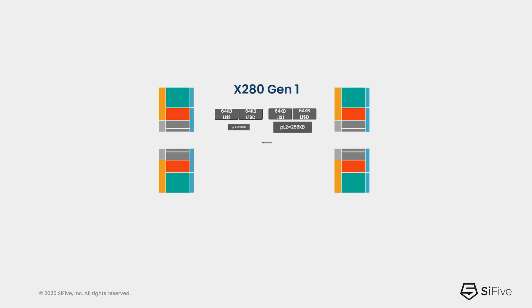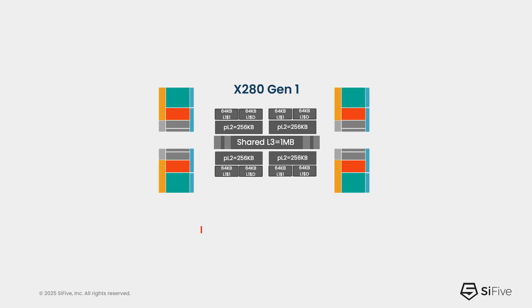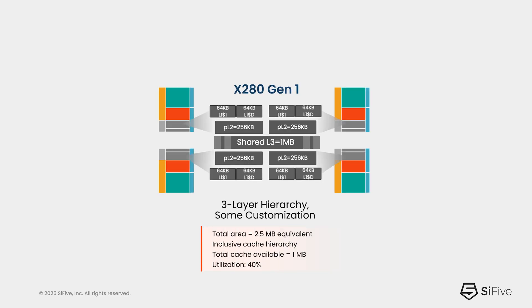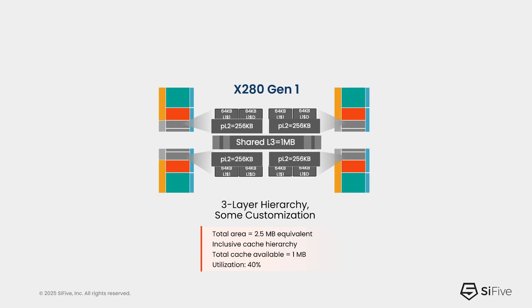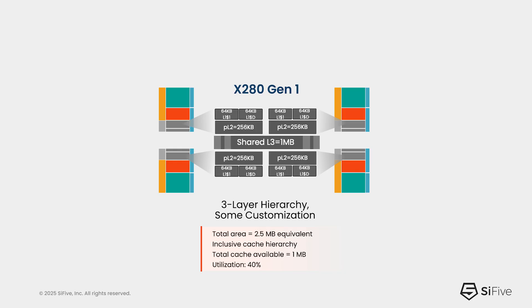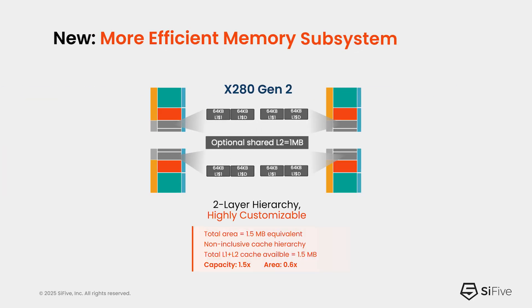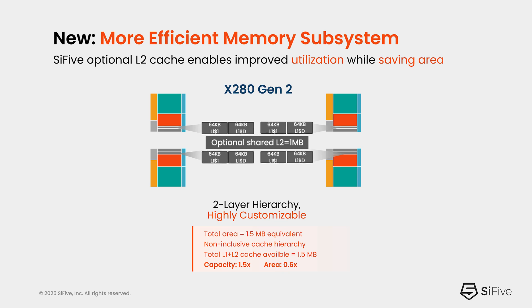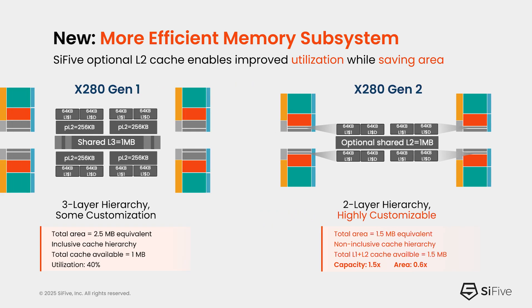In the memory subsystem, one of the efficiency improvements we've made is to remove a level of the memory hierarchy. In the first-generation X200 series cores, every core had a private Level 1 and private Level 2, and they shared a Level 3 cache that was inclusive. In the second generation, we've moved to a model where there's a single Level 1 cache plus a shared L2 across all the cores in a cluster, and we actually get higher performance and lower area from this configuration.